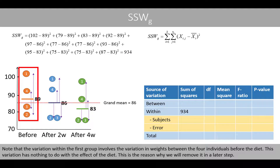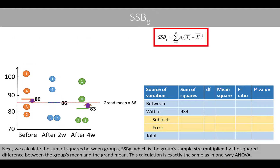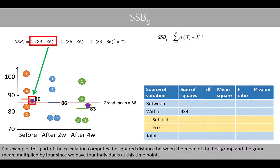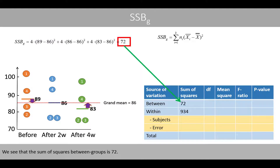Note that the variation within the first group involves the variation in weights between the four individuals before the diet. This variation has nothing to do with the effect of the diet, which is the reason why we will remove it in a later step. Next, we calculate the sum of squares between groups, SSBG, which is the group's sample size multiplied by the square difference between the group's mean and the grand mean. This calculation is exactly the same as in the one-way ANOVA. For example, this part of the calculation computes the square difference between the mean of the first group and the grand mean, multiplied by four since we have four individuals at this time point. We see that the sum of squares between groups is 72.